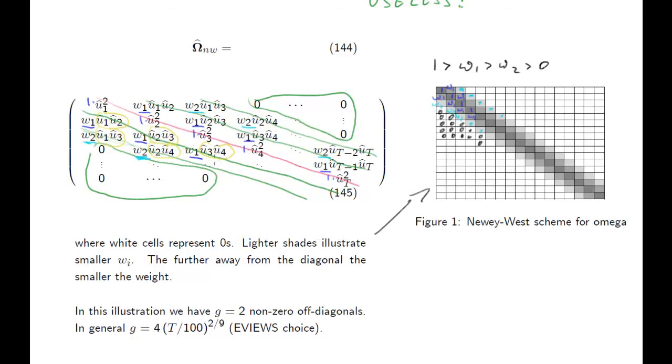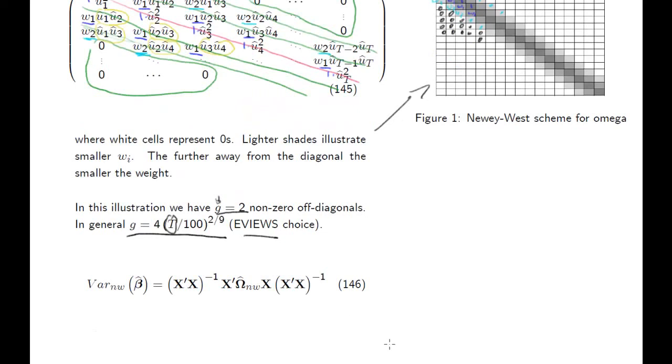Let me also say, not necessarily will we have two off-diagonals here. In the illustration we had 2. This value here is called g. In general we calculate g as such - it's a function of the sample size. So the more observations we have, the fewer zeros we will use here. And if you use - fortunately you don't have to do this calculation yourself. Again, EVIEWS can calculate Newey-West standard errors, and how does EVIEWS decide how many of these off-diagonals we need? Basically with this formula. This is how EVIEWS decides how to use this.